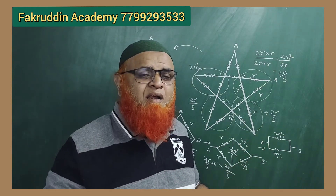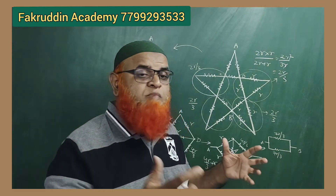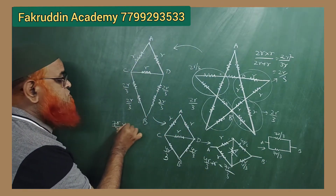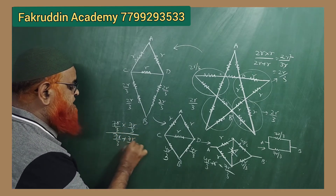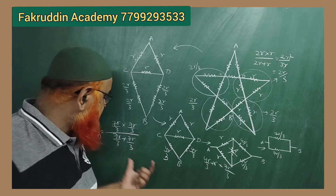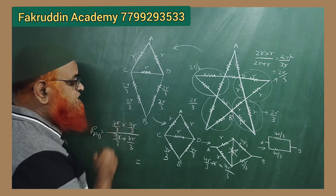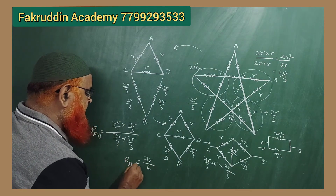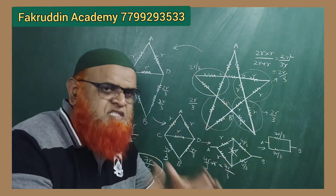These two 7R by 3 branches are in parallel. Using the formula R1 times R2 divided by R1 plus R2, we get 7R/3 times 7R/3 divided by 7R/3 plus 7R/3. This gives the resistance across A and B as 7R by 6.